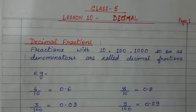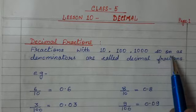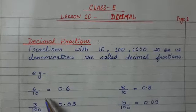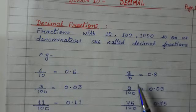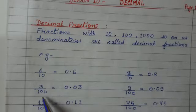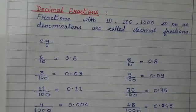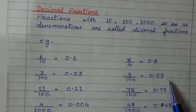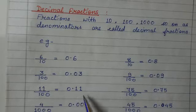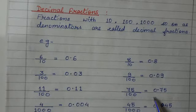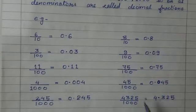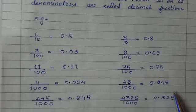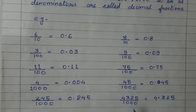Decimals are a special kind of fraction with 10, 100, 1000 and so on as denominators. Look at here: 6 upon 10, denominator is 10, and we can write this number in the form of decimal — it is 0.6. 8 upon 10 is 0.8. Now 3 upon 100 is 0.03. And 9 upon 100 is 0.09. 11 upon 100 is 0.11. And 75 upon 100 is 0.75. 4 upon 1000 is 0.004. And 45 upon 1000 is 0.045. 245 upon 1000 is 0.245. And 4325 upon 1000 is 4.325.